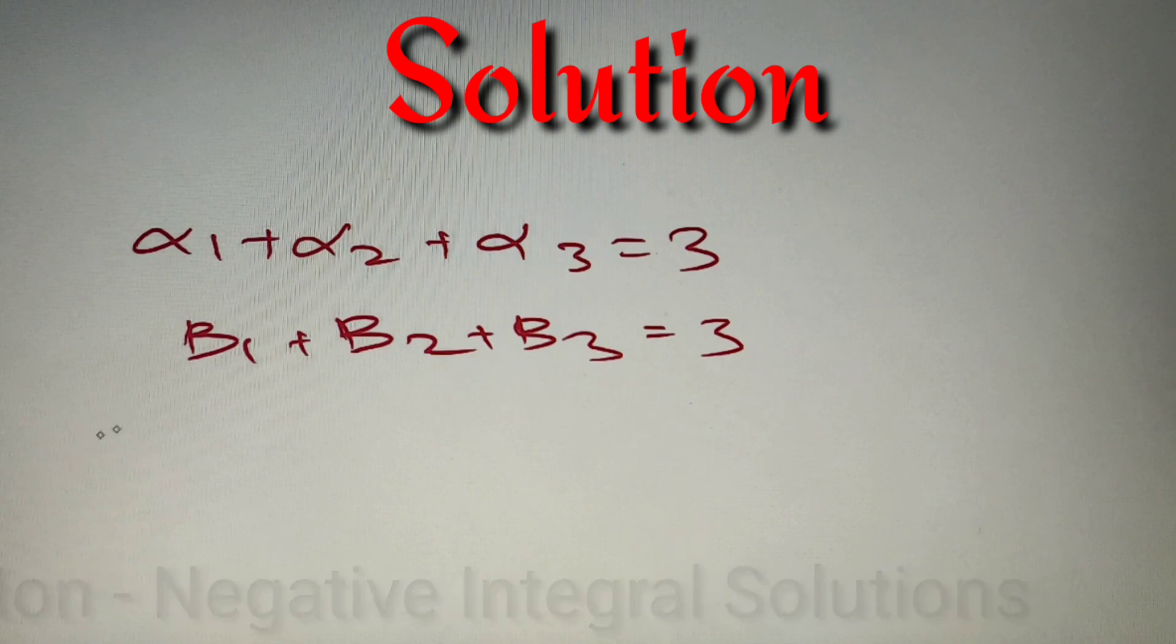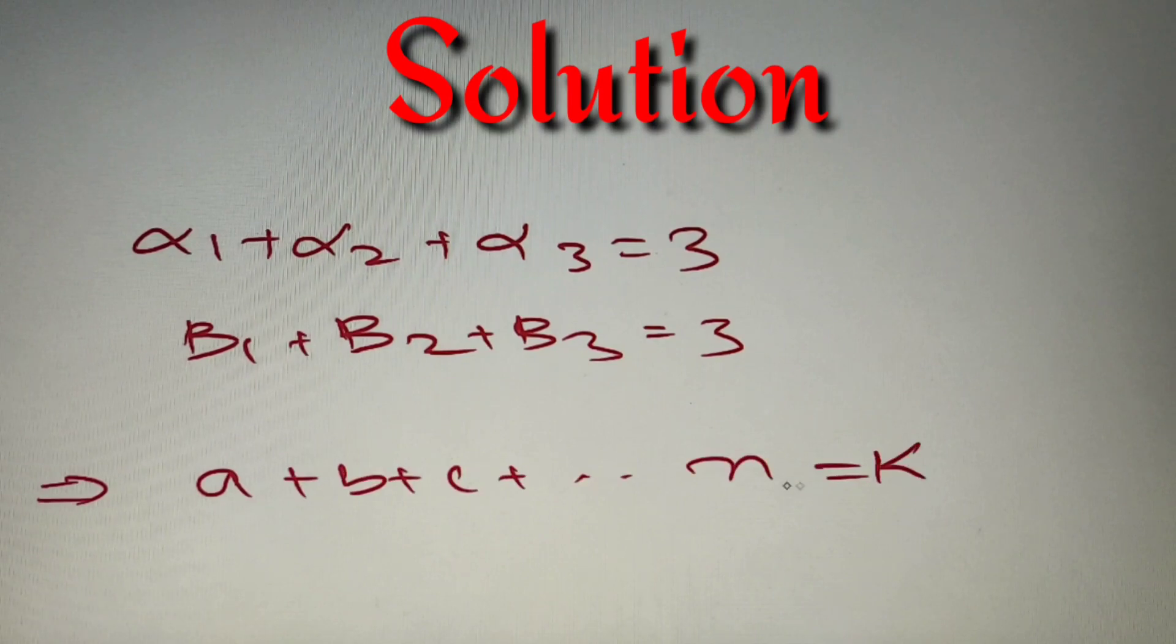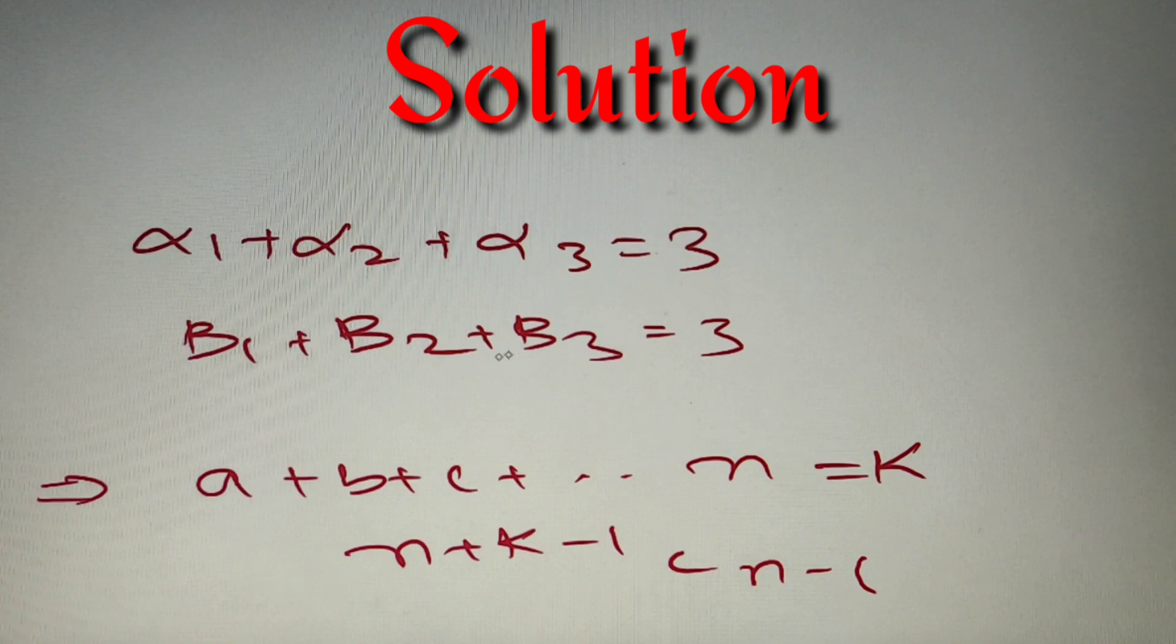If you don't know the number of non-negative integral solutions of an equation, let's take an example. If we have A + B + C + ... up to N terms = K, then the number of non-negative integral solutions is (N + K - 1) C (N - 1). Using this formula we can find solutions for both equations, and their multiplication will give our answer.